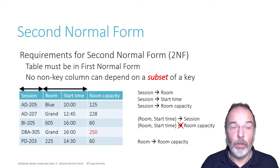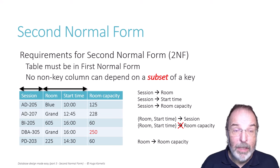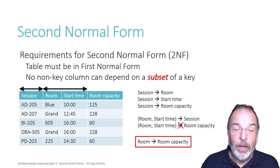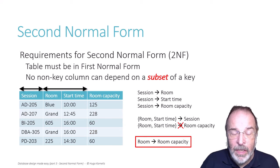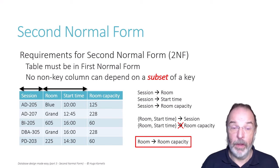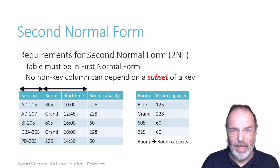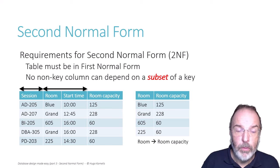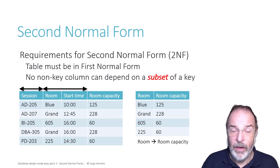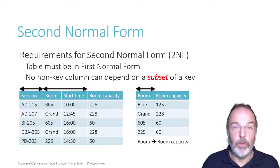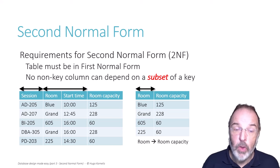The way to fix second normal form violations is to look at what the actual functional dependency is. Room determines room capacity. The columns mentioned in this functional dependency should be in a table of their own. So we have a table with room and room capacity. Room determines room capacity — room capacity does not determine the room; look for instance at rooms 605 and 225, both with a room capacity of 60. So there is just one candidate key in this table on the room column, and this table adheres to both first and second normal form.